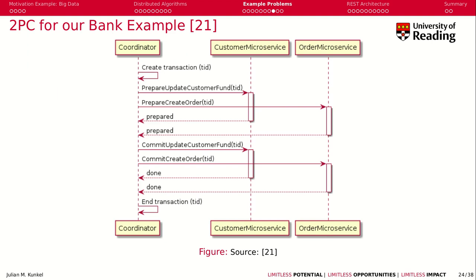For our bank example, we create a transaction ID. Then we prepare the customer fund update with this transaction ID and also give our microservice the information to update the order. We get back the 'prepared' response — meaning commit or not — and then go to phase two where we inform both microservices of the decision, get an acknowledgement, and we are done.